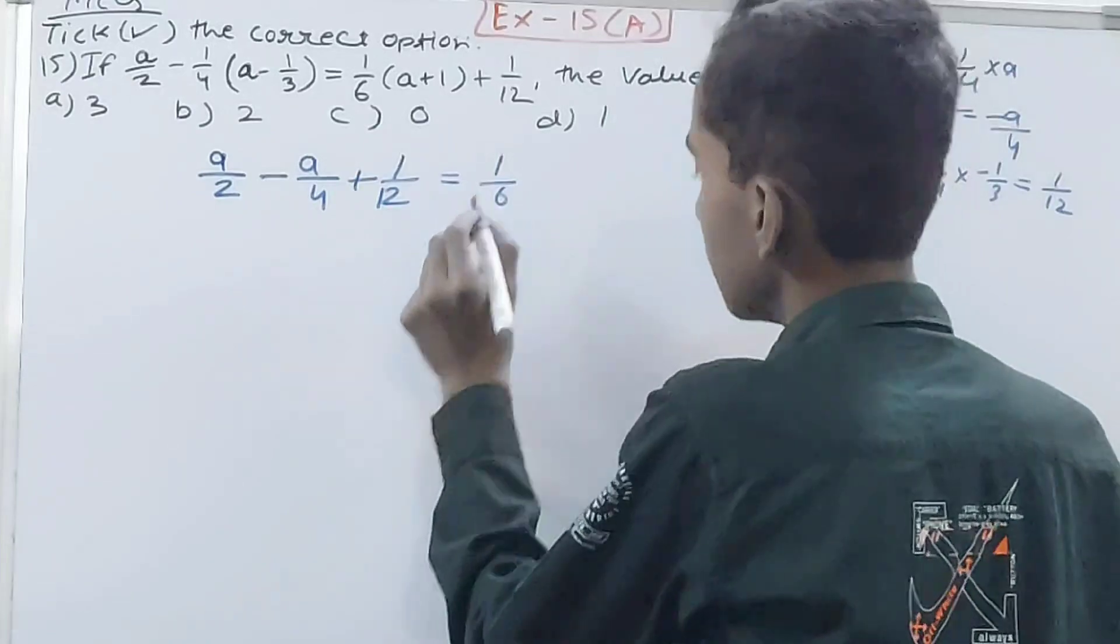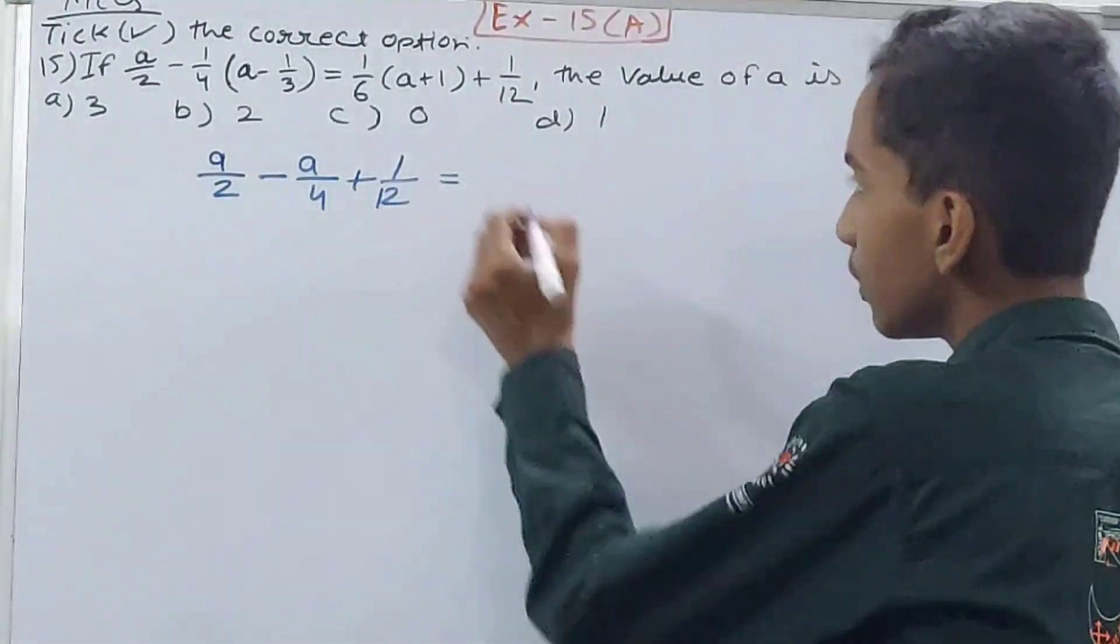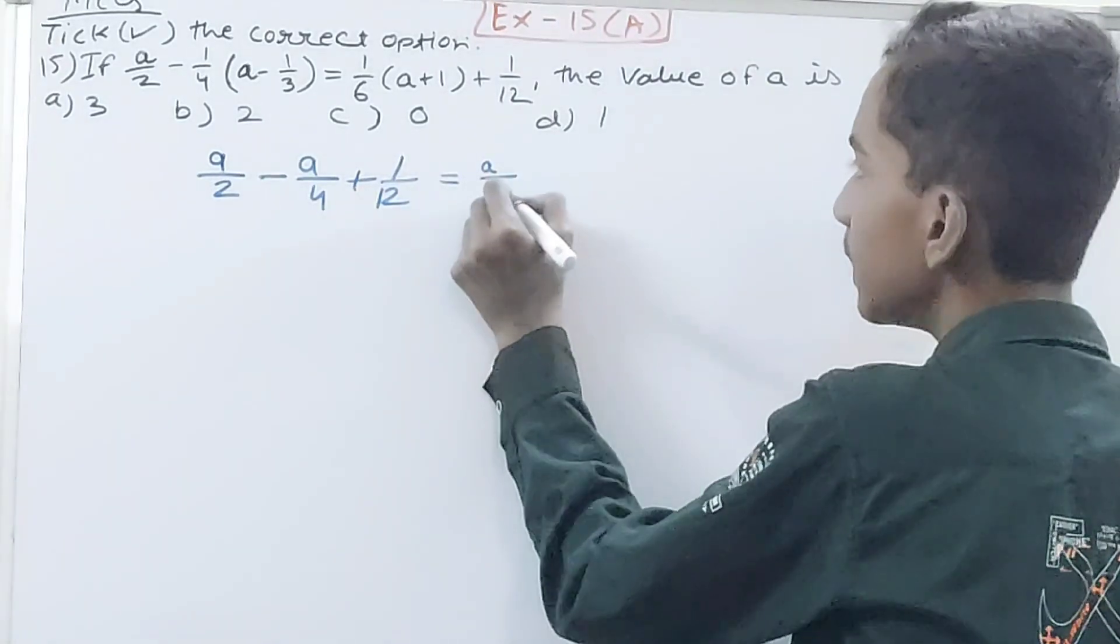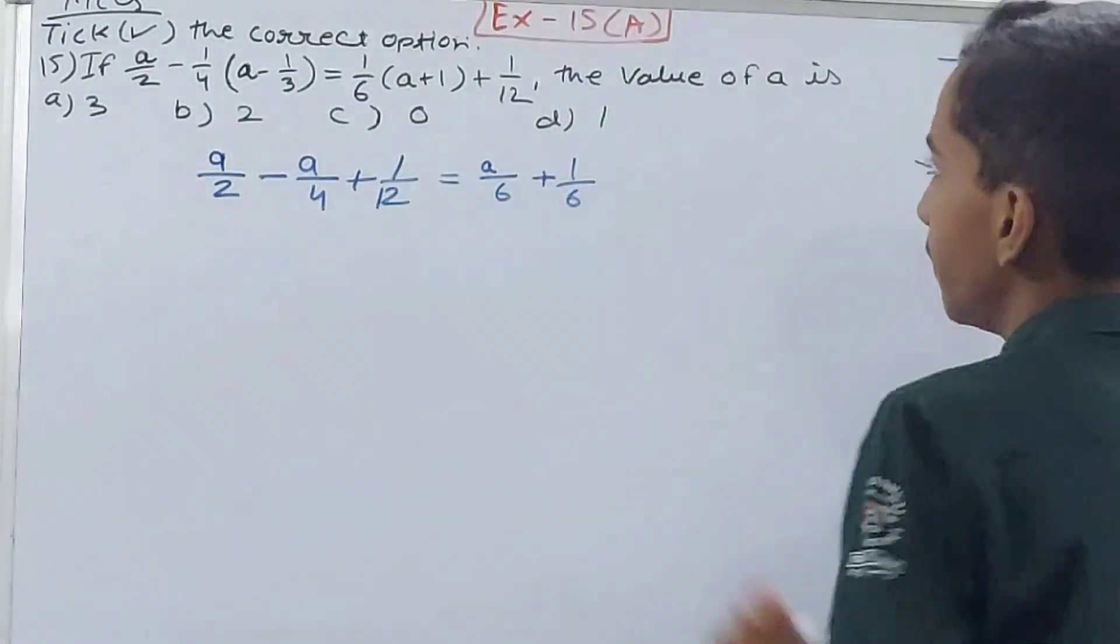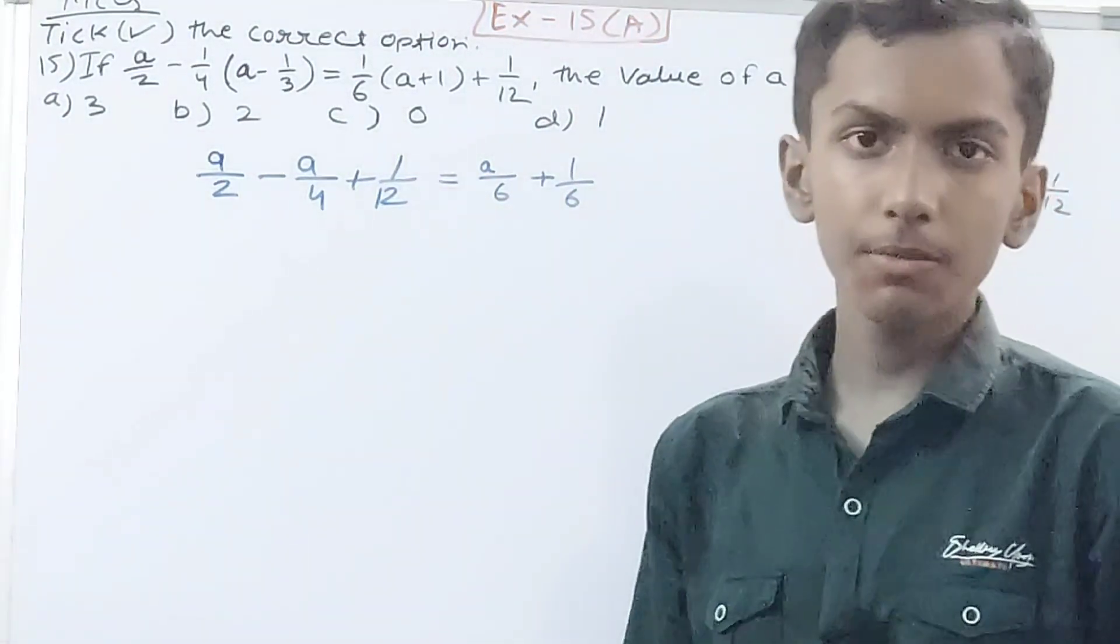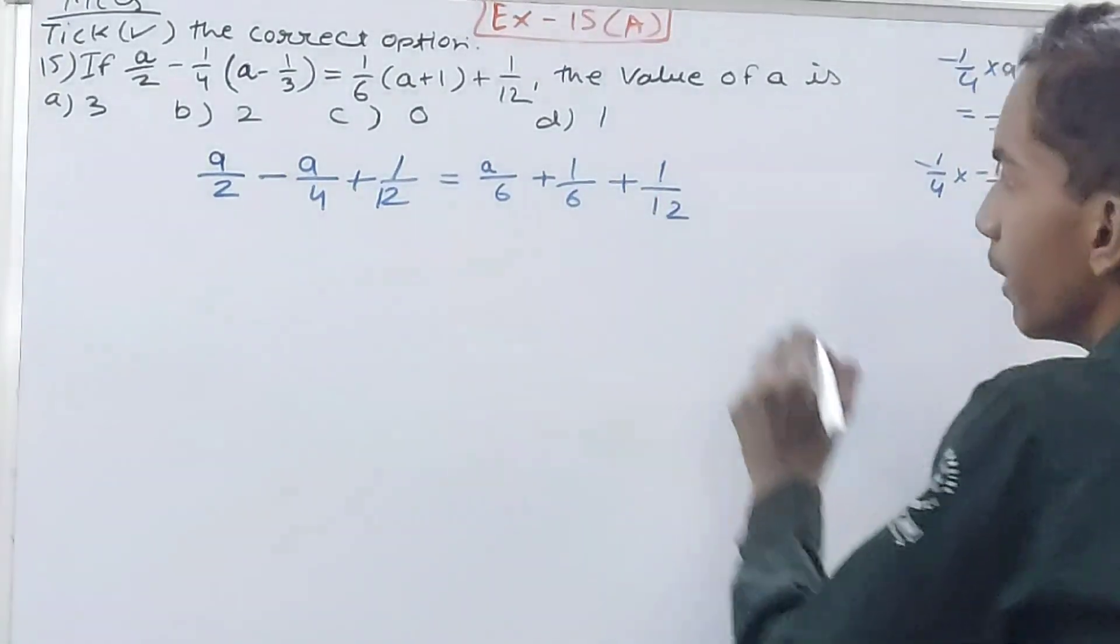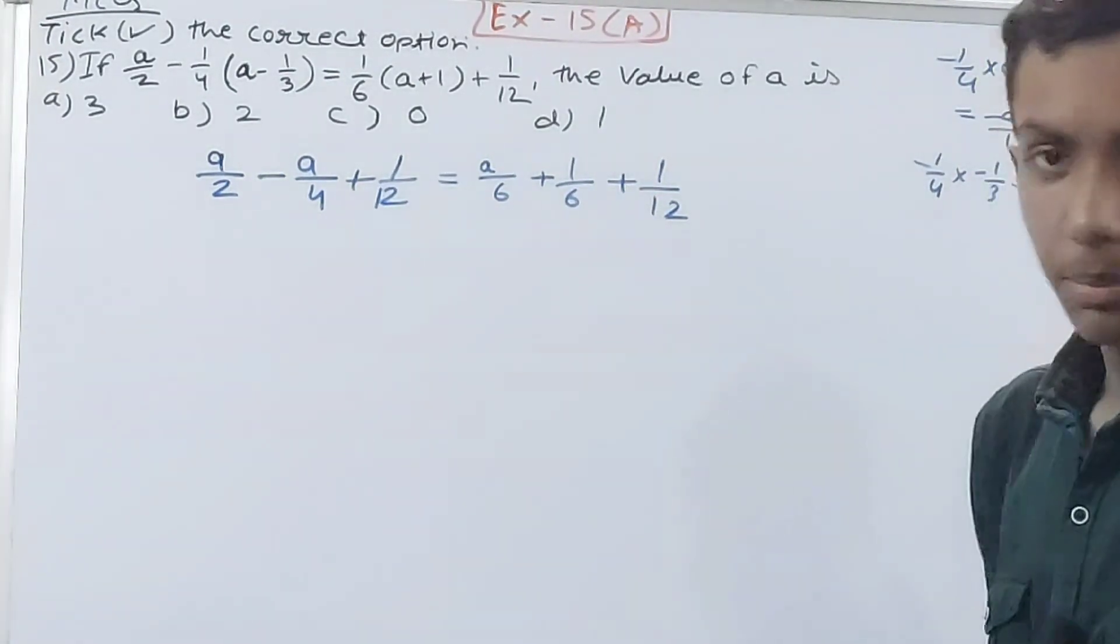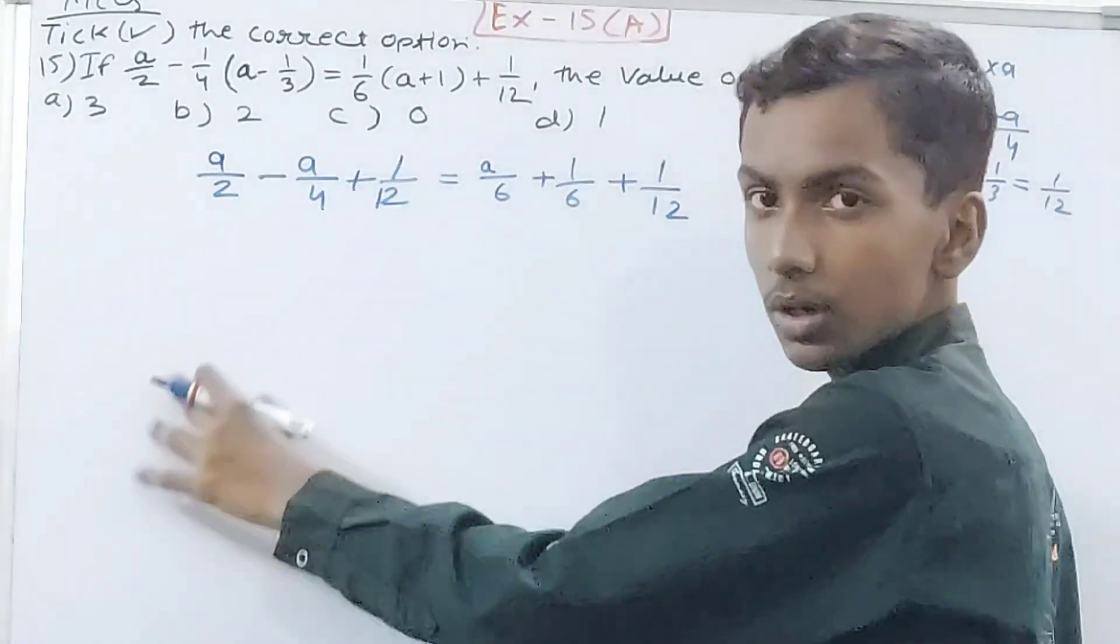On the right side, 1/6 into a, same thing here also: a/6 plus 1/6 into 1, that's going to be 1/6 only. We know any number multiplied by 1 is the number itself, and then plus 1/12.